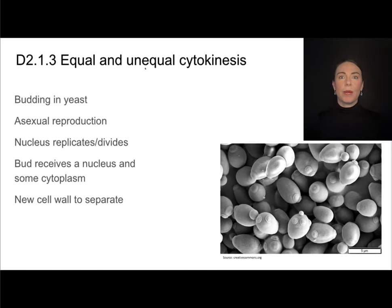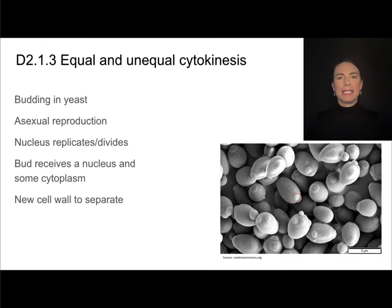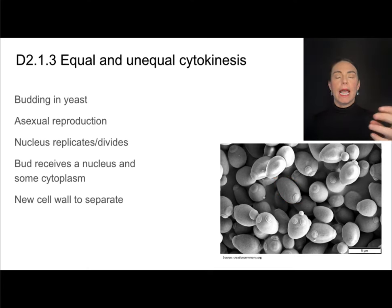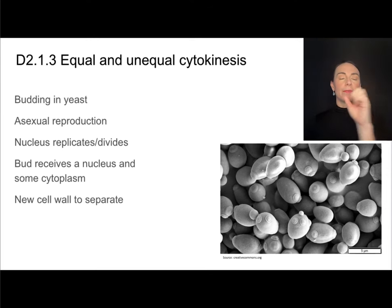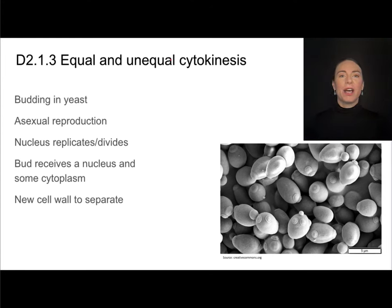Budding in yeast is a great example of unequal division in cytokinesis. Budding is a form of asexual reproduction, and we can see larger cells with little tiny baby cells coming off of them — those are the buds. The parent cell has replicated the nucleus, and this small bud will receive the nucleus and just enough cytoplasm to have maybe one copy of each organelle. Then a new cell wall will grow between them, and that small bud can grow into a bigger cell.